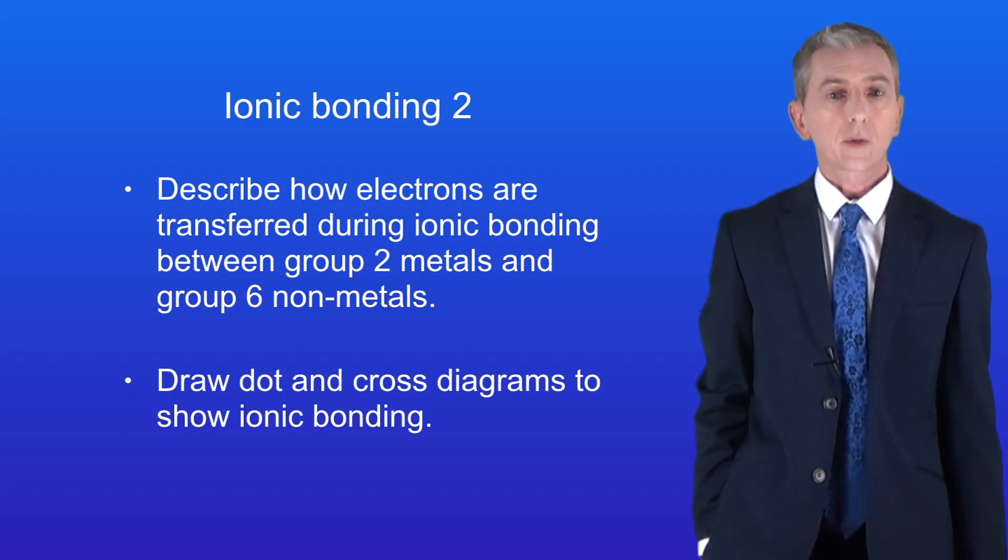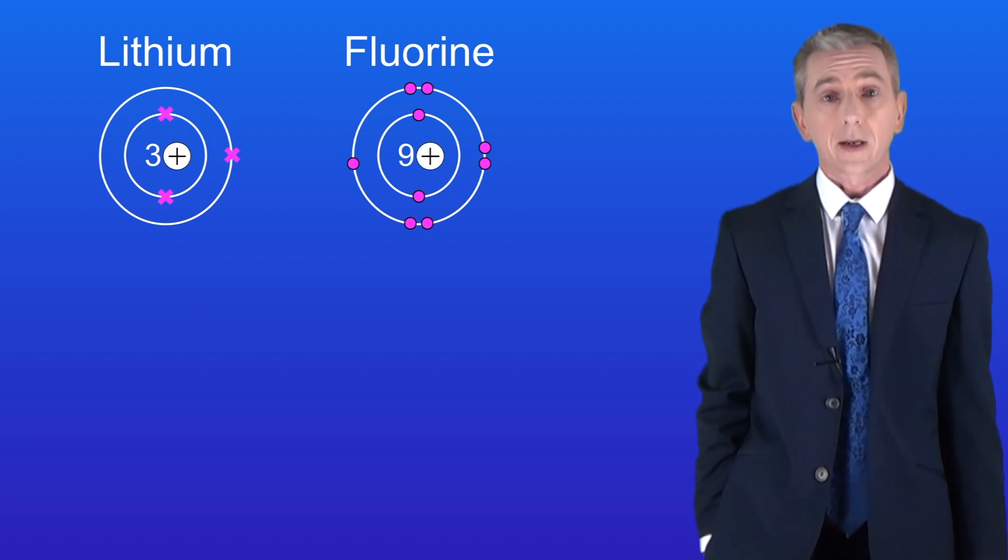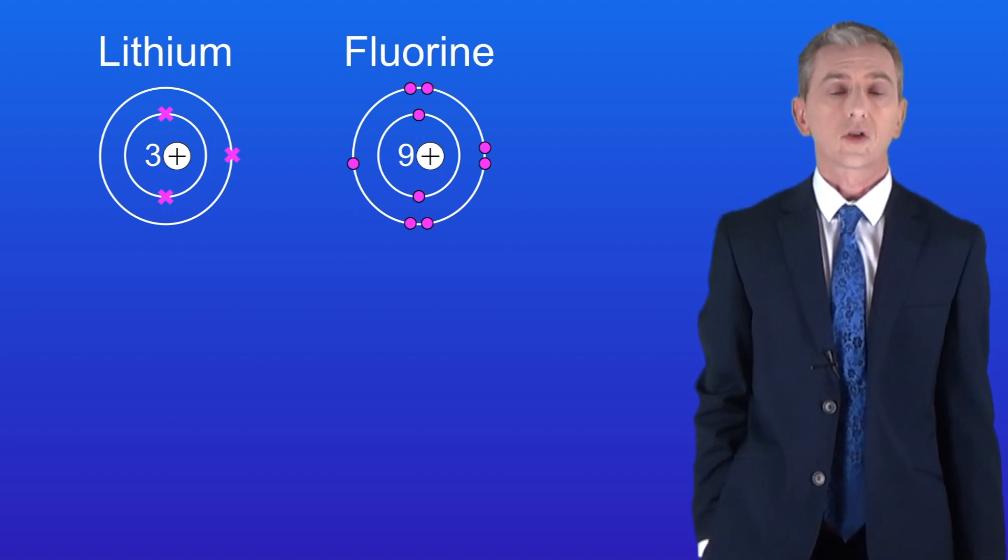In the last video we saw that ionic bonding takes place when a metal reacts with a non-metal. We looked at ionic bonding between a group 1 metal such as lithium and a group 7 non-metal such as fluorine.